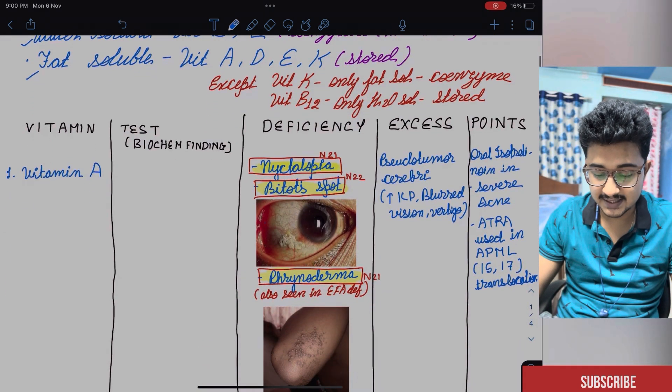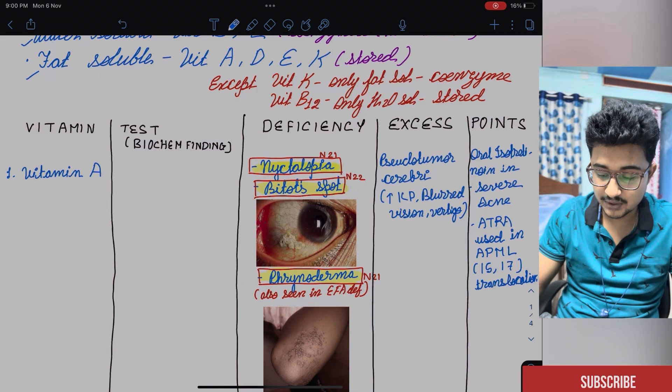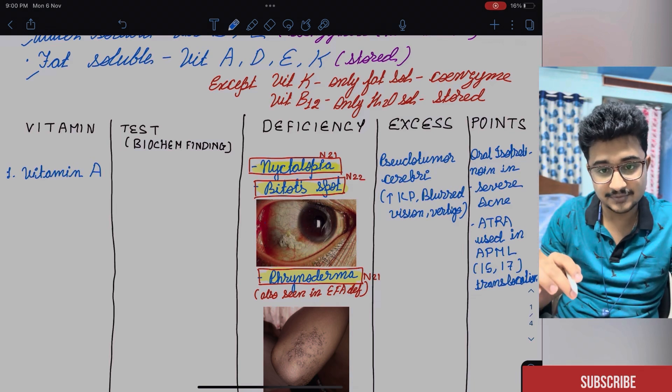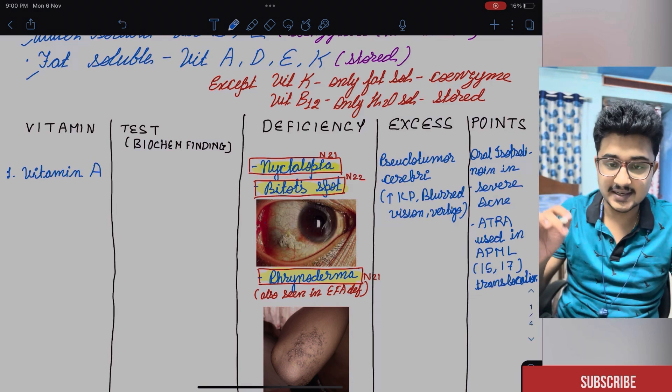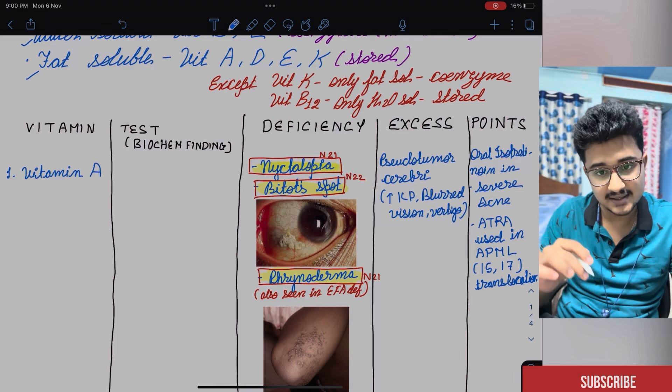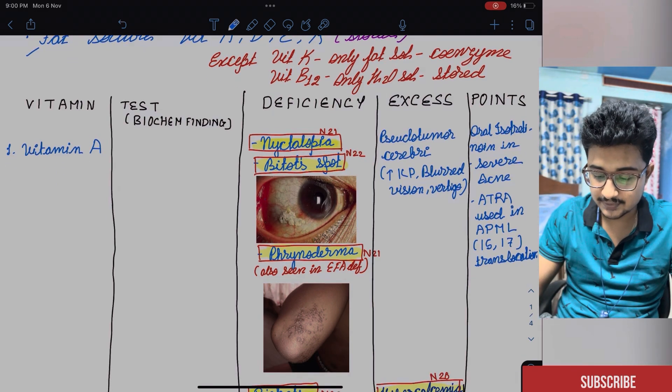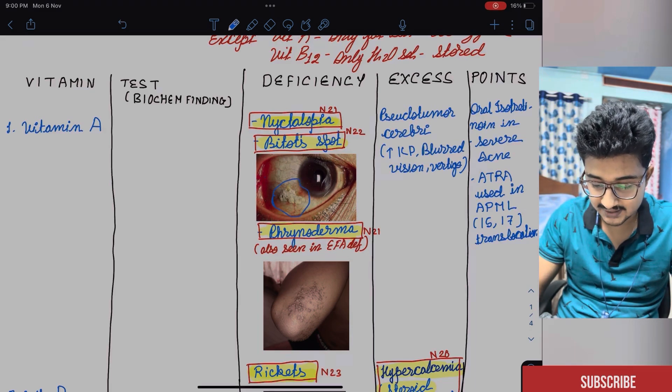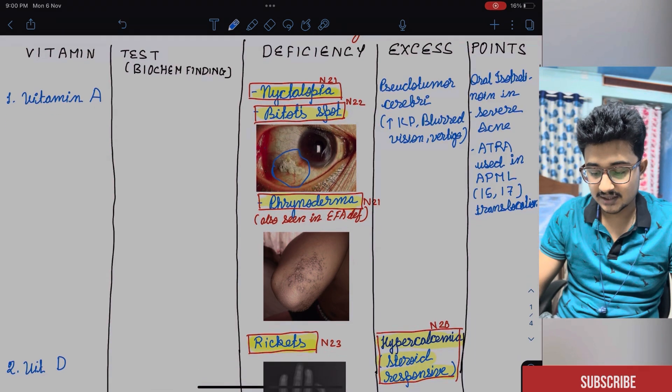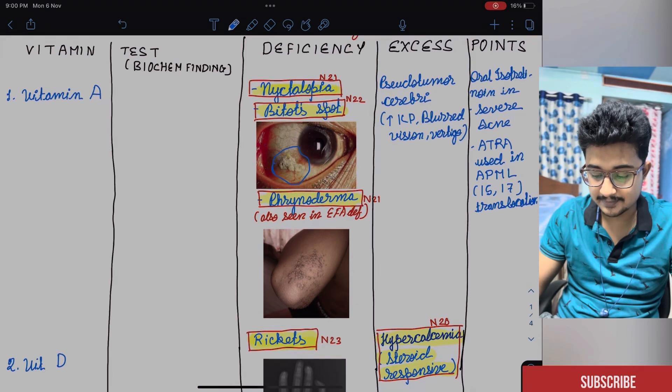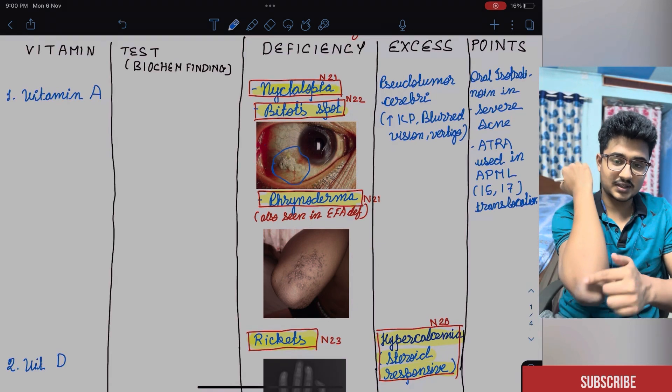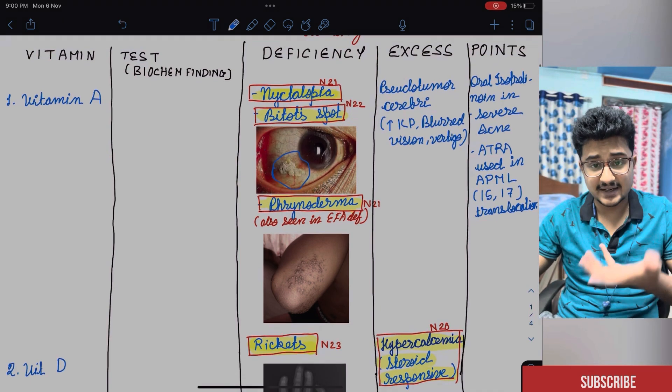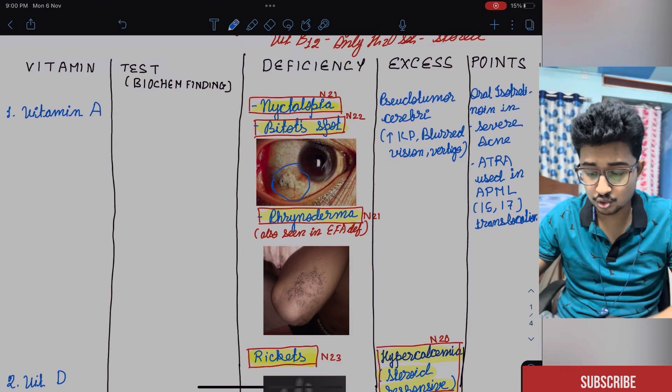First vitamin is vitamin A. In deficiency you can see is nyctalopia. This has come in NIT21. N is for NIT, F is for FMGE, INI is for INI set and A is for AIMS. In NIT21 it has come nyctalopia, bitote spot. I have shown what is the bitote spot. Look at this image. Then in phrinoderma also NITPG 2021 it came that small papules that are erupted near the elbow. It is also seen in essential fatty acid deficiency. It is also called the toad skin.